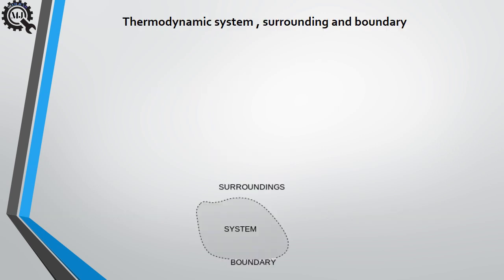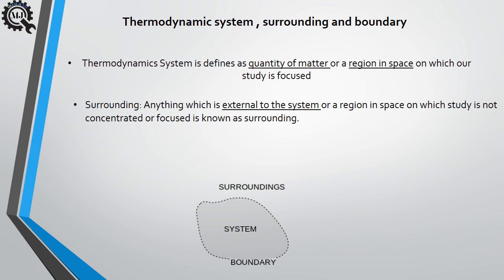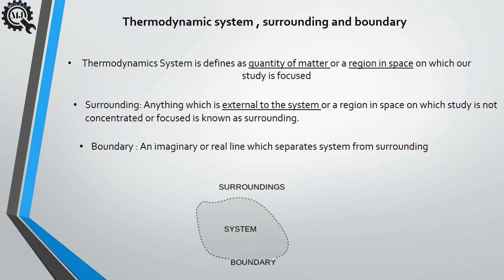Now let's see the thermodynamic system, surrounding, and boundary. A thermodynamic system is defined as a quantity of matter or a region in space on which our study is focused — it is that particular region which you have to study. Surrounding is anything which is external to the system, or a region in space on which the study is not concentrated or focused.